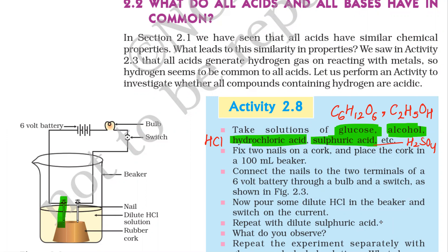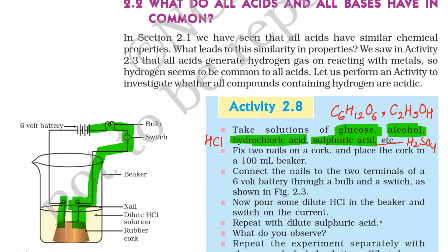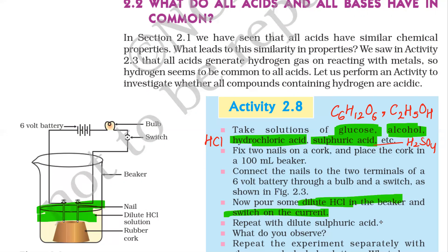So these are the two nails, and here a six-volt battery is connected, a bulb is connected, a switch is there, and it is connected again to another nail. Now pour some dilute HCl in the beaker and switch on the current. This beaker is filled with dilute HCl.